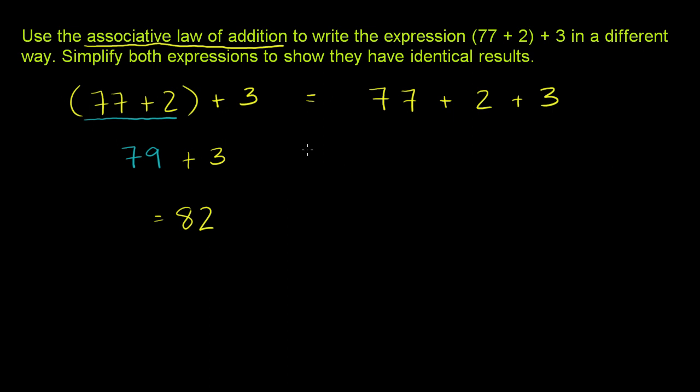But the associative law tells us, well, you know what? I could do 77 plus 2 plus 3. I could add this first and then add it to 77. And it's going to be the exact same thing as if I add these two guys first and then add the 3. And let's verify that for ourselves.